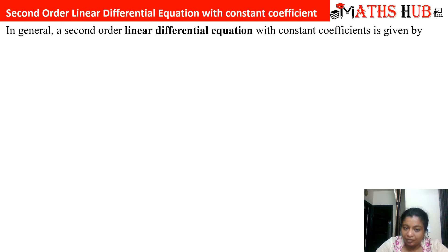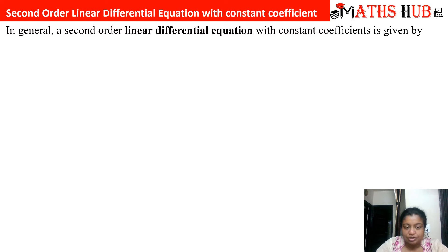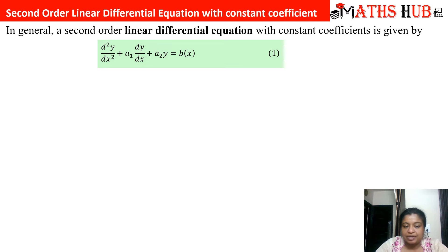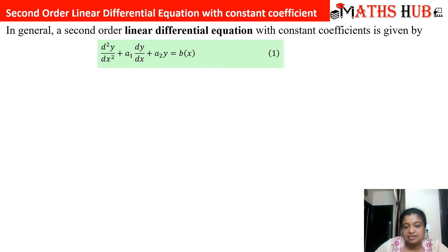Before moving to higher-order equations, let us understand a second-order linear differential equation. A second-order linear DE has order 2, degree 1, and no term containing the product of the dependent variable and its derivative. Equation 1 is: d²y/dx² + a₁(dy/dx) + a₂y = b(x). This is non-homogeneous; a₁ and a₂ are constants.